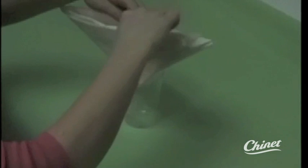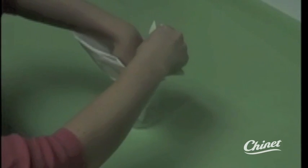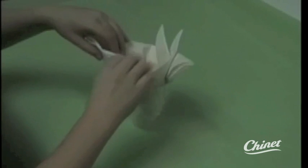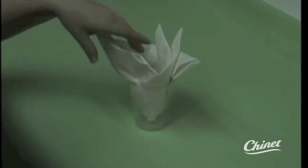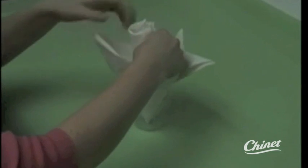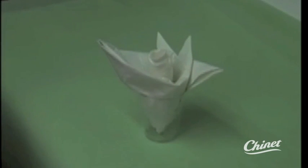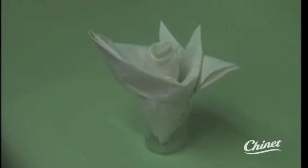Now place the leaves into a Chinette cut crystal cup and place the rose petals into the leaves. Arrange the folds as you see fit. Your rose should look like this.